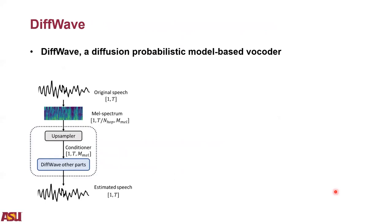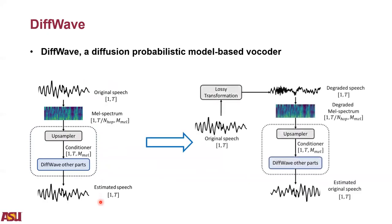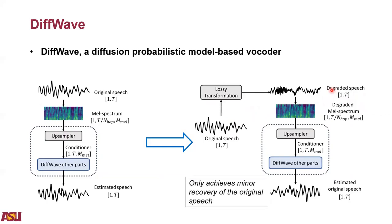In this paper, we use DiffWave as the baseline model. It is a diffusion probabilistic model vocoder with state-of-the-art synthesized speech quality, relatively short synthesis time, and a small parameter set. The left figure shows the original application procedure of DiffWave, where they use the original speech to estimate the original speech. To achieve the goal of restoring degraded speech, we change the training procedure as shown in the right figure, allowing DiffWave to estimate the original speech from the degraded speech mel spectrum. However, this simple modification only achieves a minor recovery of the original speech.